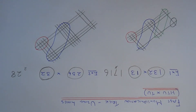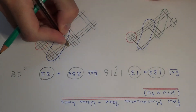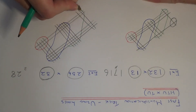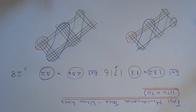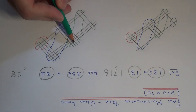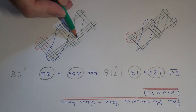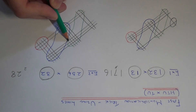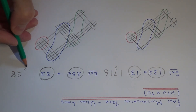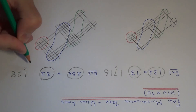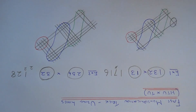We then need to count the intersections here. So we have one, two, three, four, five, six, seven, eight, nine, ten, eleven, twelve, thirteen, fourteen, fifteen, sixteen, seventeen, eighteen, nineteen. Plus the two carried over, which makes twenty-one. So we put the one here and carry the two underneath.